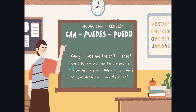'Can I borrow your pen for a moment?' — aquí estás haciendo un REQUEST: ¿Puedo prestar tu bolígrafo por un momento? 'Can you help me with this math problem?' — ¿Puedes ayudarme con este problema de matemáticas? Es un REQUEST, estás pidiendo ayuda. Y por último: 'Can you please turn down the music?' — ¿Podrías, por favor, bajar el volumen de la música?